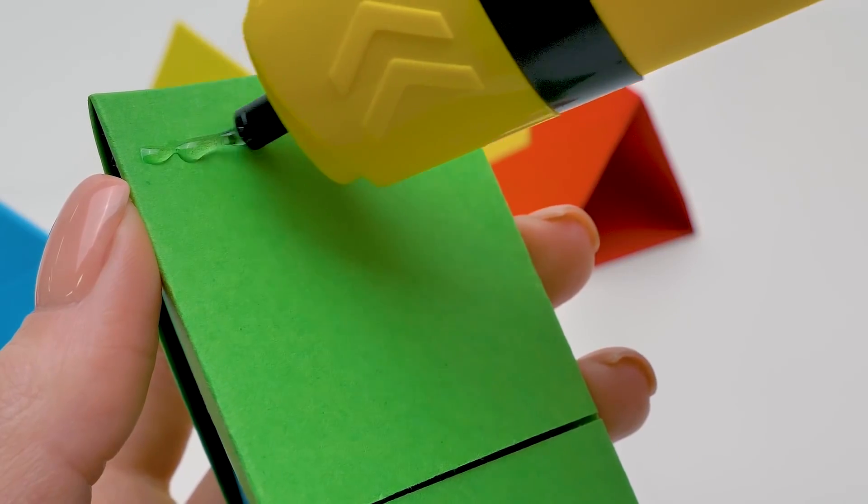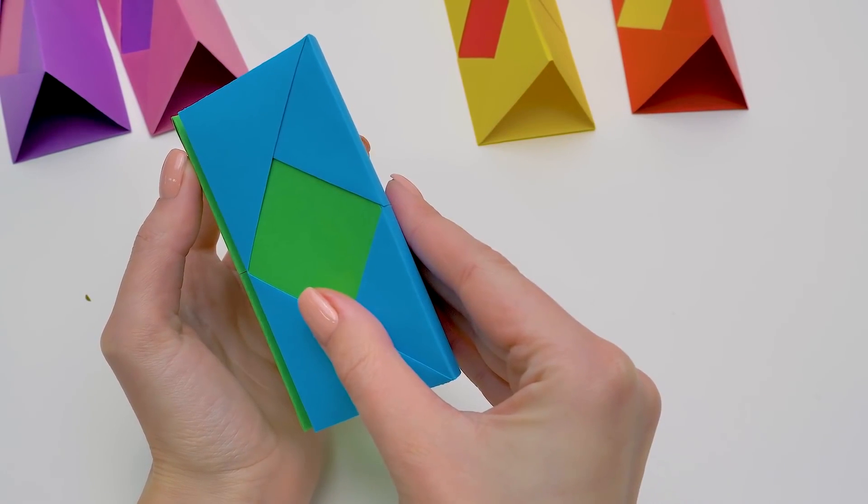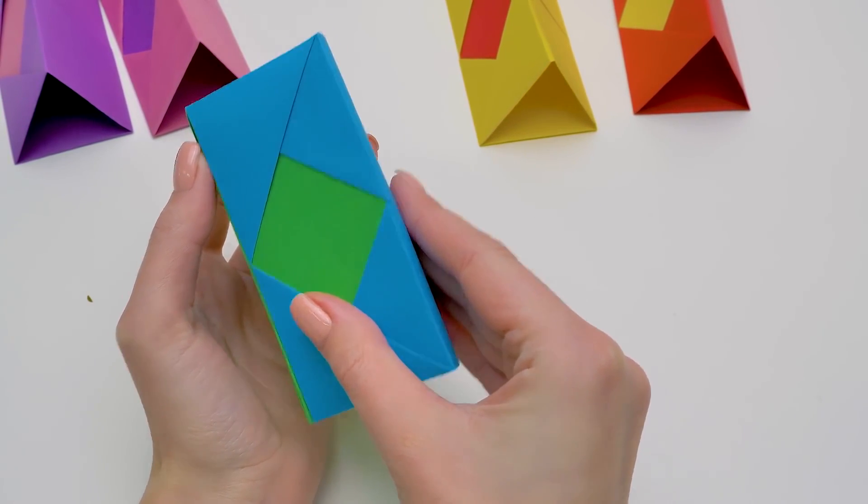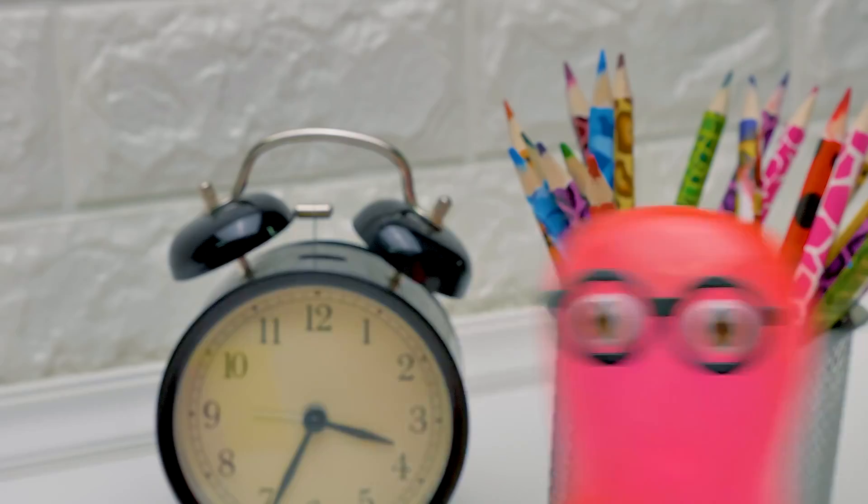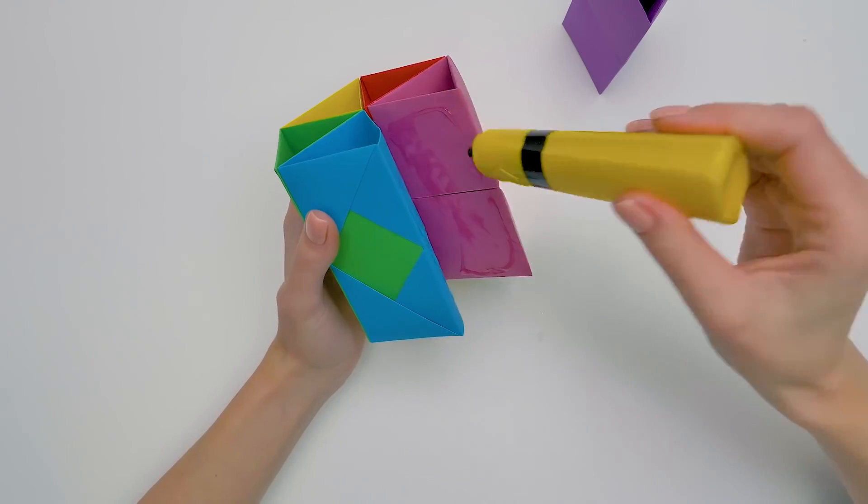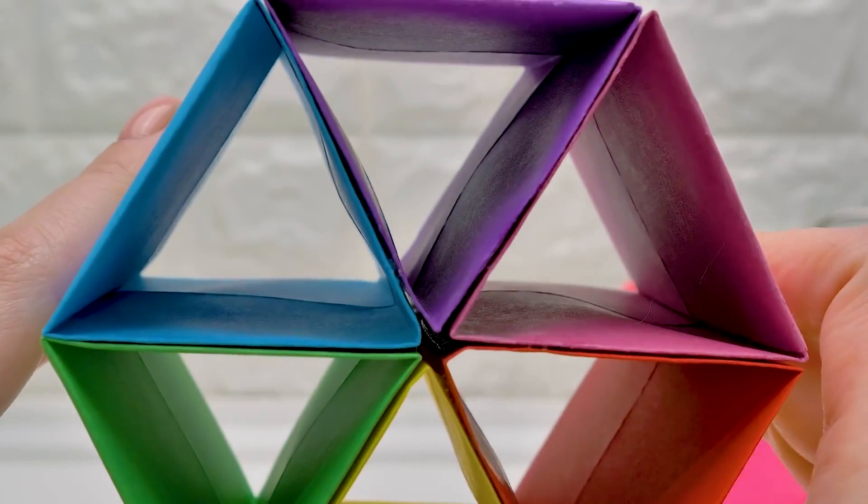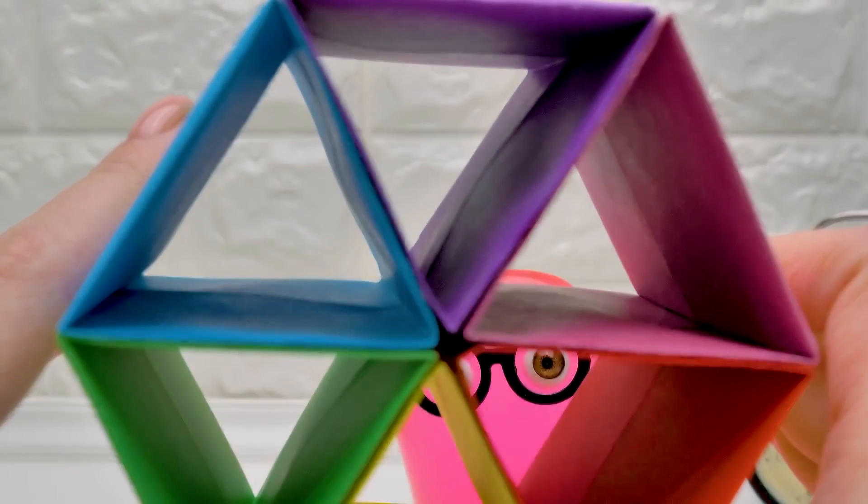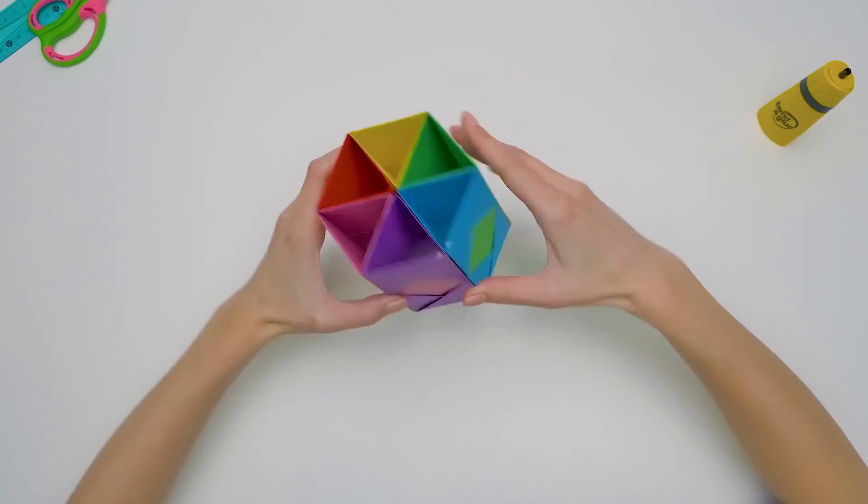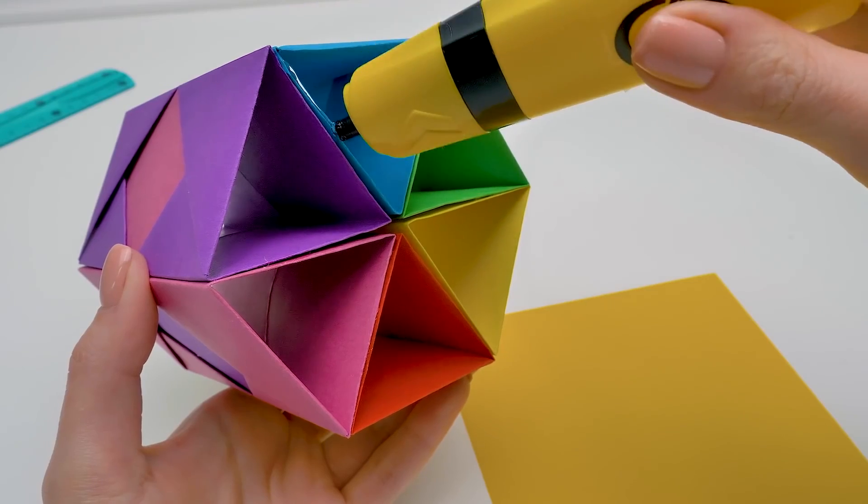You see, guys? Our pencil holder is really easy to assemble. Just apply some glue and press the pieces together. Ta-da! So we're making a pencil holder? Oh, looks like I let it slip out before it was time. But there's nothing to keep the pencils from falling out! Oh, well, I'm about to fix that. In the meantime, bring me my pencils and markers, please.